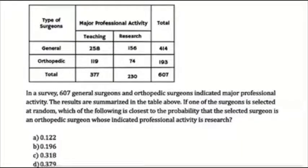In a survey, 607 general surgeons and orthopedic surgeons indicated major professional activity. The results are summarized in the table above. If one of the surgeons is selected at random, which of the following is closest to the probability that the selected surgeon is an orthopedic surgeon whose indicated professional activity is research?